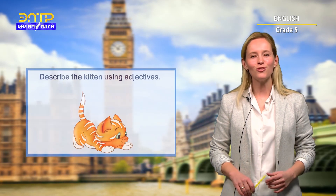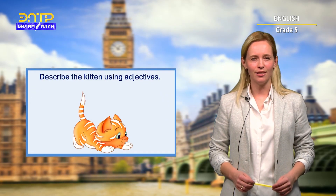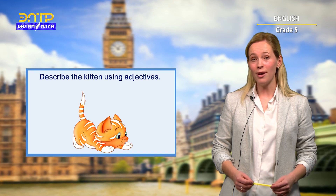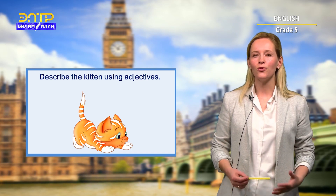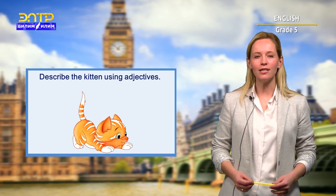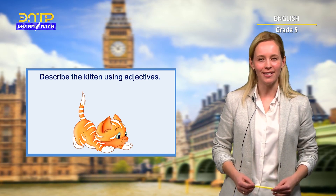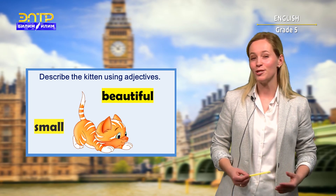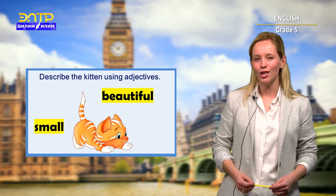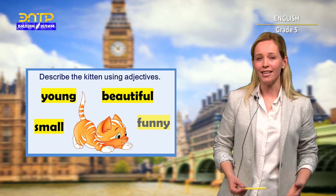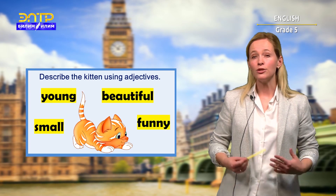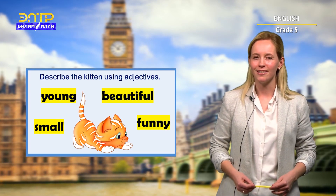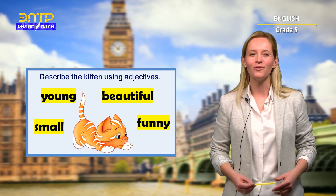Look at this stripy kitten. Isn't it cute? Can you describe it? What are the first words that come to your mind? Probably beautiful and small, young and funny. But what are the opposites of these words? Let's learn them now.